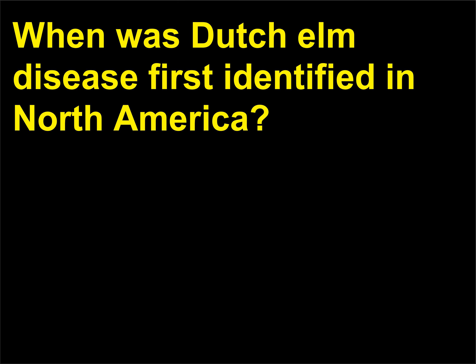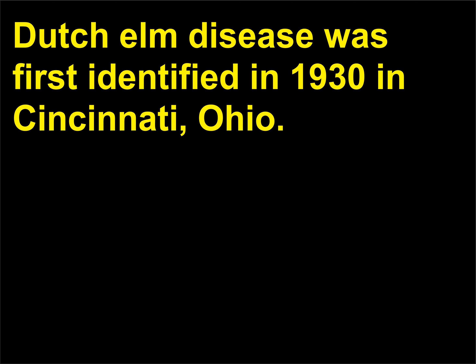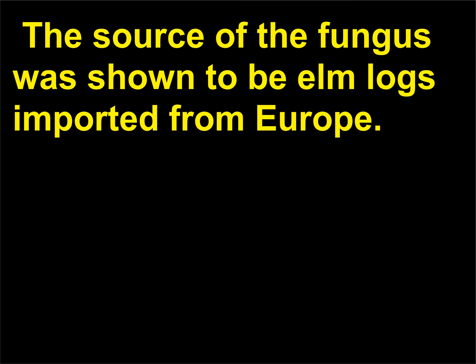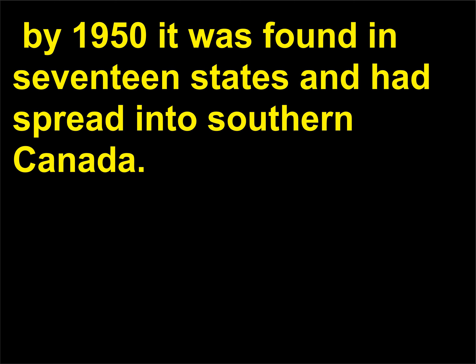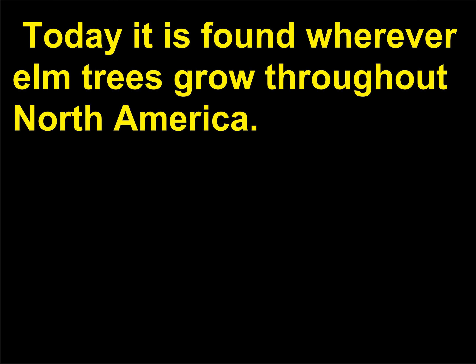When was Dutch elm disease first identified in North America? Dutch elm disease was first identified in 1930 in Cincinnati, Ohio. The source of the fungus was shown to be elm logs imported from Europe. By 1940 the disease had spread to 9 states. By 1950 it was found in 17 states and had spread into southern Canada. Today it is found wherever elm trees grow throughout North America.